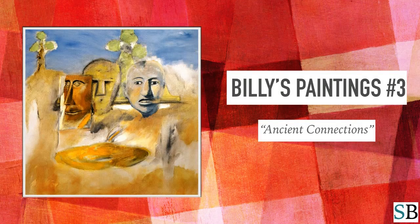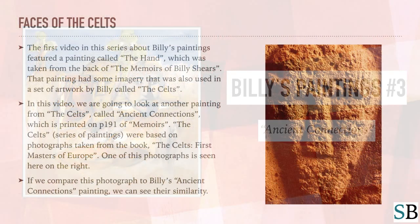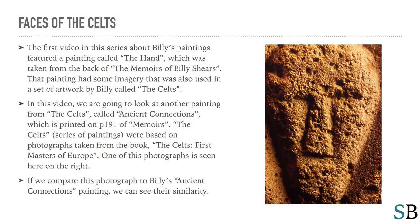Billy's Paintings, Number 3: Ancient Connections. The first video in this series about Billy's paintings featured a painting called The Hand, which was taken from the back of the memoirs of Billy Shears. That painting had some imagery that was also used in a set of artwork by Billy called The Celts. In this video, we are going to look at another painting from The Celts called Ancient Connections, which is printed on page 191 of Memoirs.